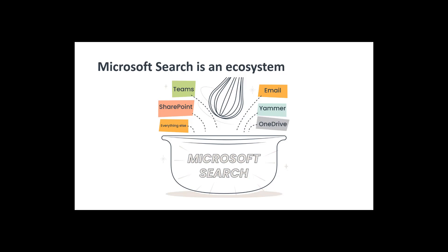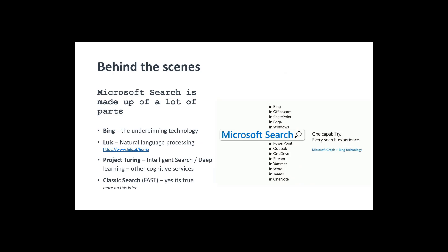Using external connectors and everything else, Microsoft Search is really the first global solution that's fully integrated, and this is something that's been attempted many times in the past. Behind the scenes, Microsoft has spent years perfecting the Bing search ecosystem — bringing all the algorithms, artificial intelligence, natural language processing like Project Lewis, intelligent deep learning like Project Turing using cognitive services, and of course classic FAST search is still there as well.